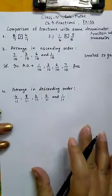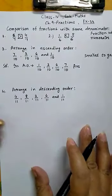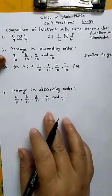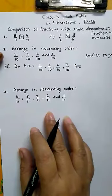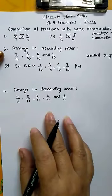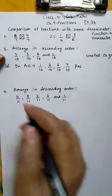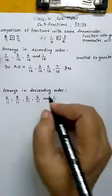Let us take an example of descending order. In this example, we have 5 fractions with the same denominator 11, so we will compare the numerators. Students, remember this.